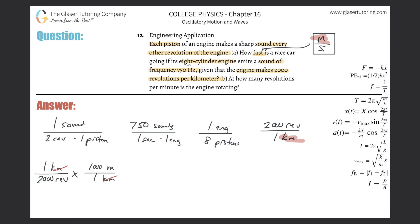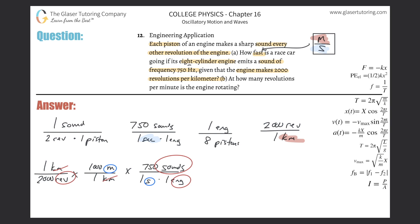Next I focus on seconds. The seconds appear in the frequency term — 750 sounds per second per engine — and it's already in the denominator, so I place that fraction into the setup: 750 sounds per one second per engine. Now I have meters and seconds, but also revolution, sound, and engine that need to cancel.